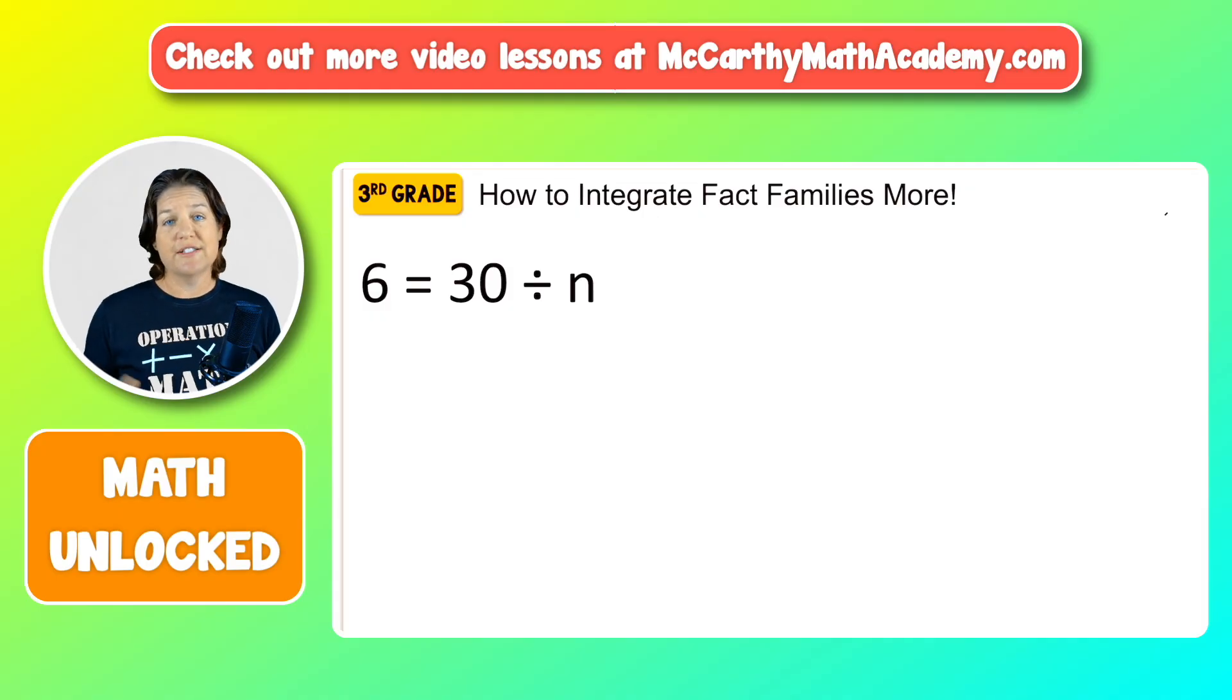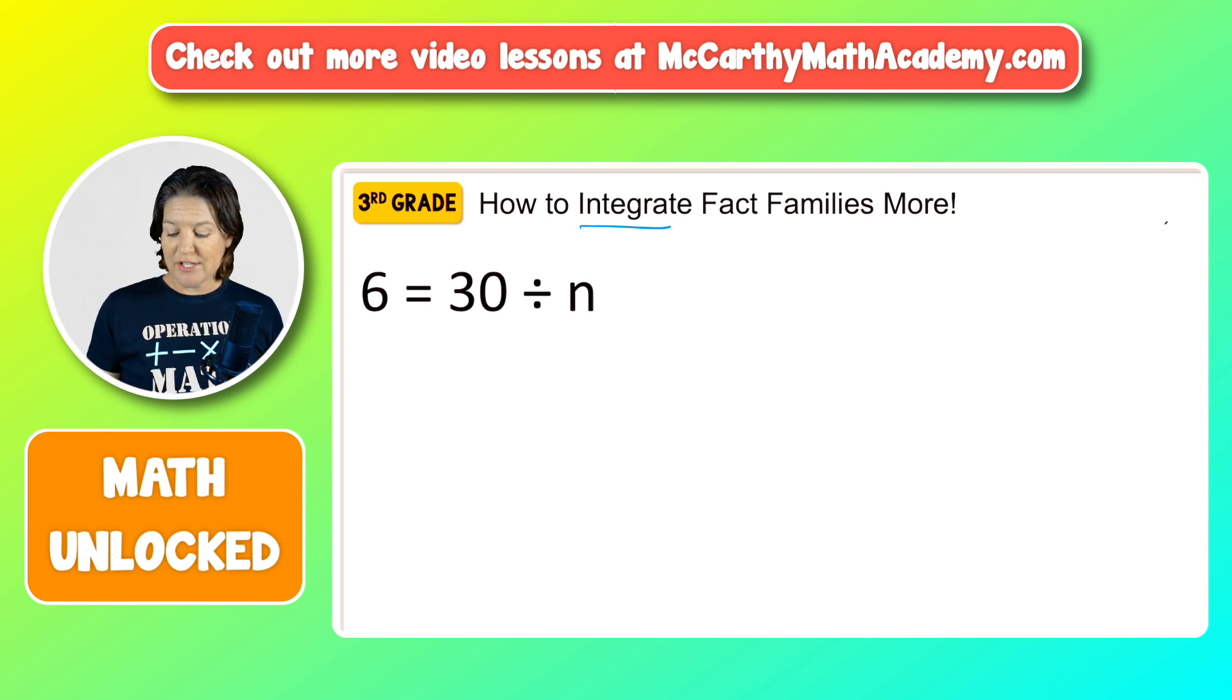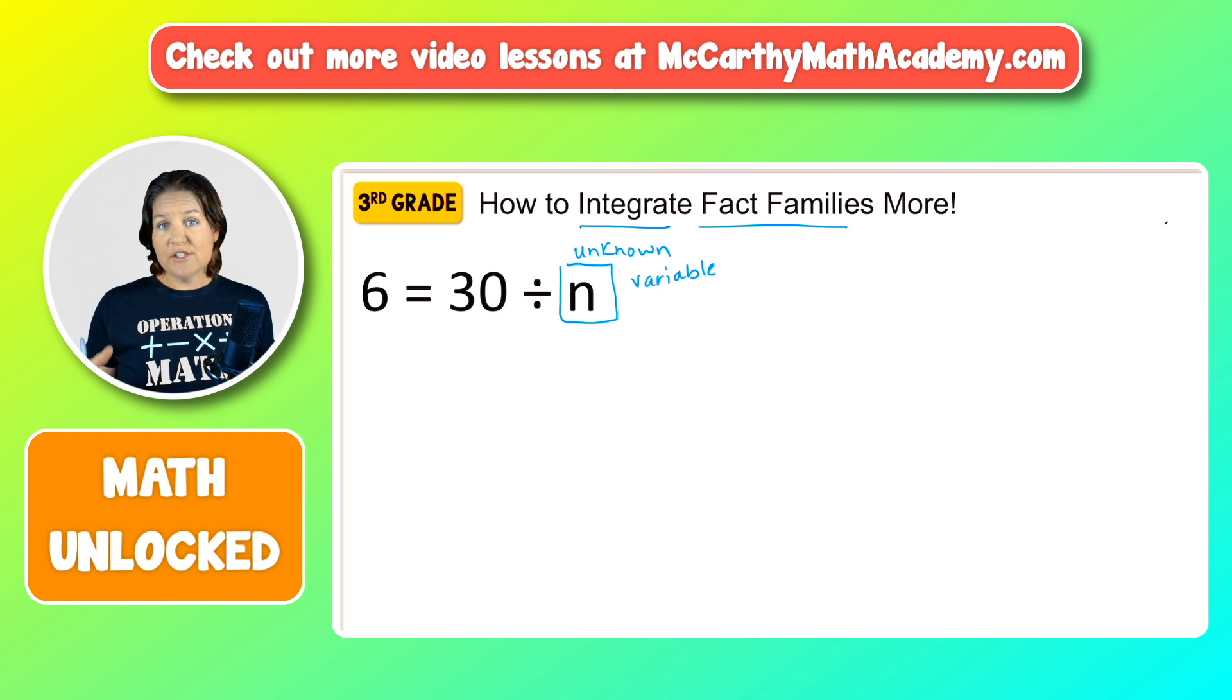Your third graders may come into contact with a problem like this: 6 equals 30 divided by N. Really at first, this might look a little bit confusing to them. So what we're going to do today is integrate fact families into this problem. Truly, the only thing that we are required to do for this problem is to figure out what N is. N is the unknown variable. It's an unknown value. We don't know what this value is yet.